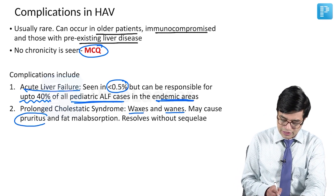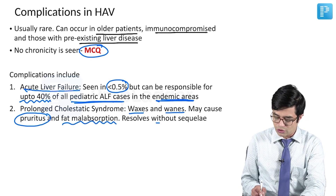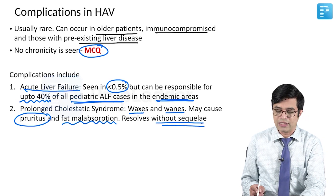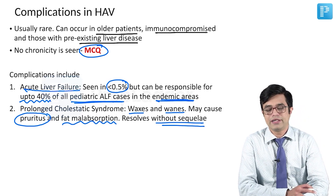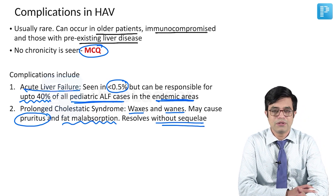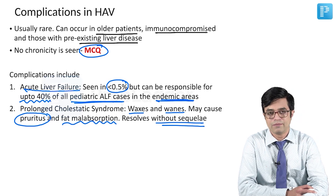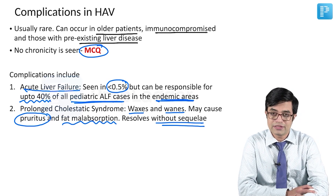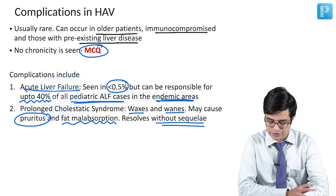The second complication is prolonged cholestatic syndrome. Some children can have prolonged cholestasis with a waxing and waning nature. It can cause pruritus and fat malabsorption. It resolves without sequelae. Very rarely, antipruritic drugs like antihistamines and fat-soluble vitamin supplementation may be needed. Even if this syndrome develops, it tends to improve within about 6 to 8 months in most patients.